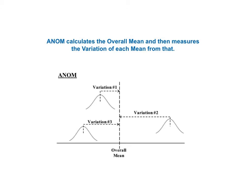ANOM calculates the overall mean, also known as the grand mean. It then measures the distance from that overall mean to each sample mean. In this conceptual diagram, each sample is depicted by a normal curve. The distance between each sample mean and the overall mean is identified as a variation. ANOM retains the identity of the source of each of these variations — number one, number two, and number three — and displays this graphically in the ANOM chart, which we'll show later in this video.